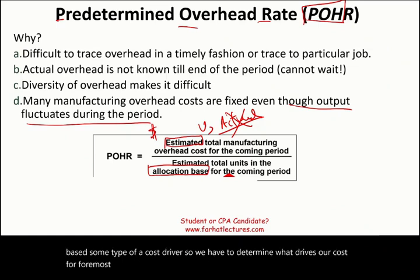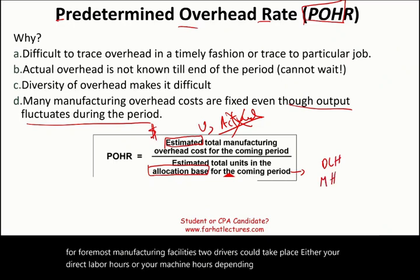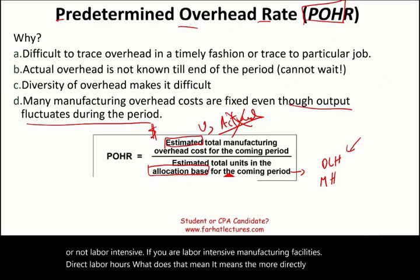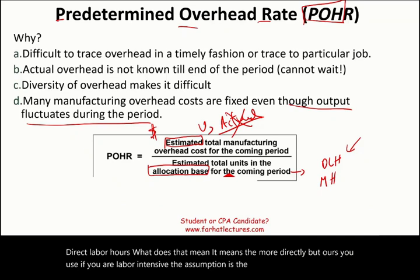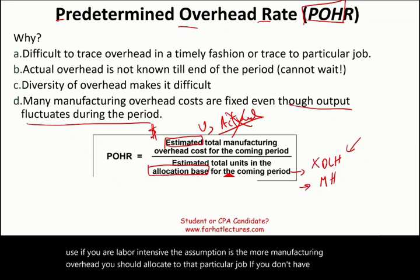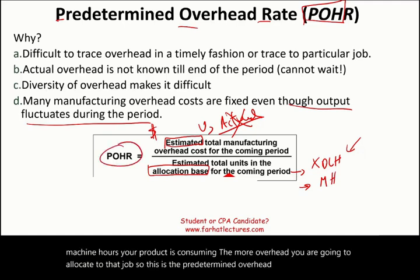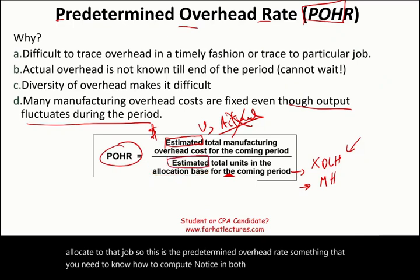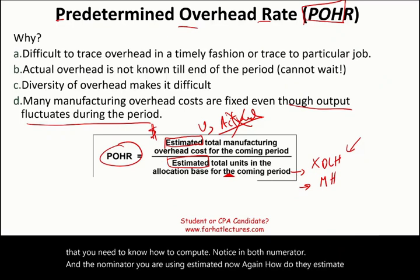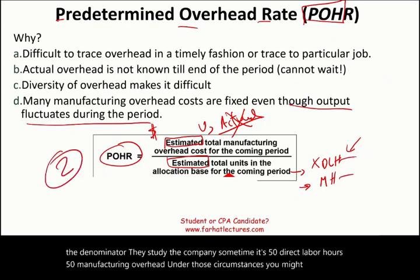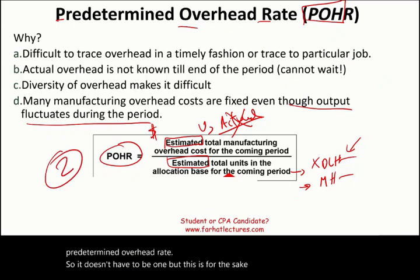For most manufacturing facilities, two drivers are common: direct labor hours or machine hours, depending on whether you are labor intensive. If you are labor intensive, the assumption is that the more direct labor hours you use, the more manufacturing overhead you should allocate to that particular job. If you have more machines than labor, you use machine hours — the more machine hours your product consumes, the more overhead you allocate. We could also have multiple predetermined overhead rates, but this is the introductory method.